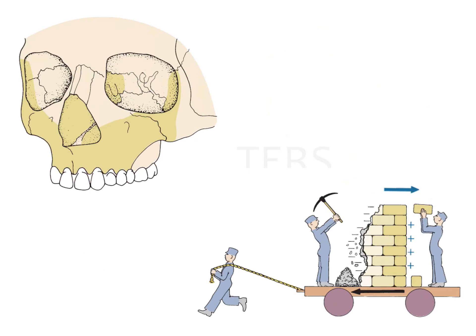Both these types of displacements take place in the nasomaxillary complex, causing a net result of downward and forward growth of the maxilla. Now because there is downward and forward growth of the maxilla, it would appear that the shaded area might be an area of deposition or apposition — but this is not true. Although the maxilla is moving downward and forward, this area is actually an area of resorption.